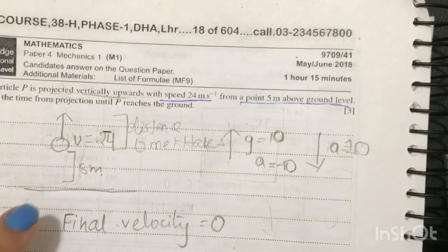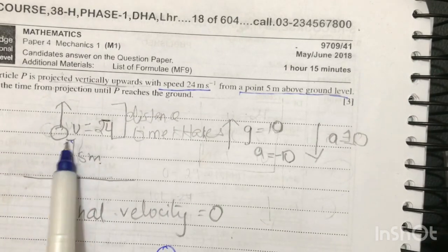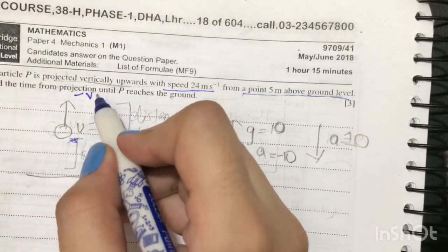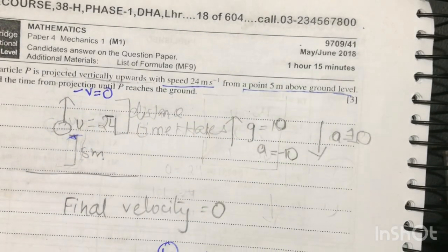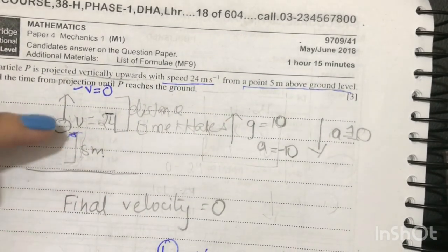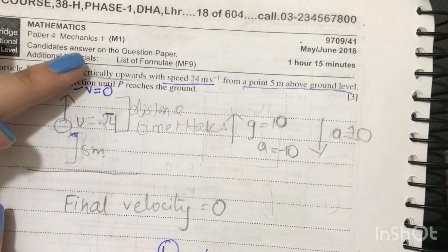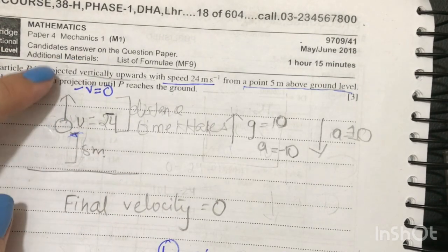This is the time taken for the particle to move from this height to its maximum height where its velocity will be zero. Now we have to also learn how much the particle has traveled, the distance traveled from this point to this point.